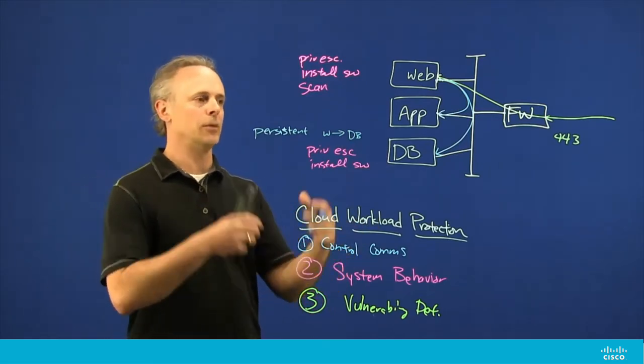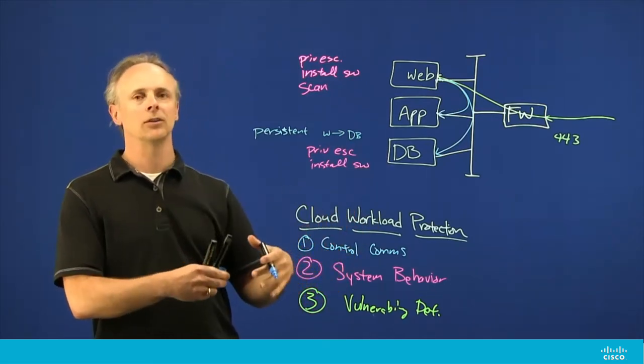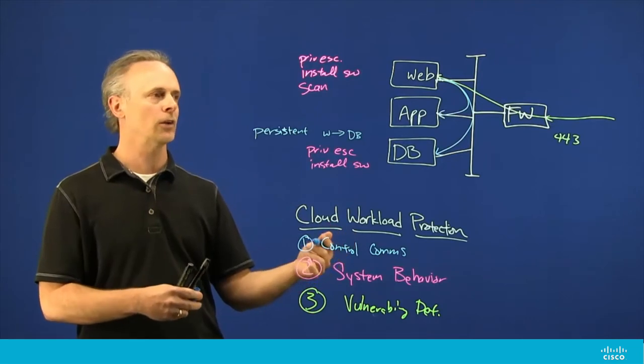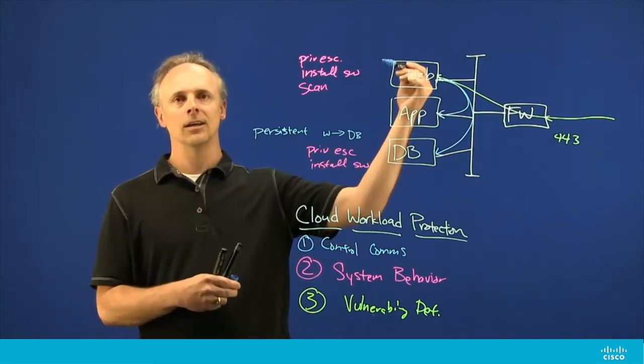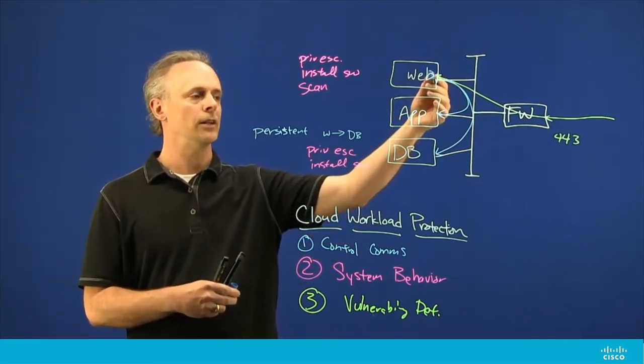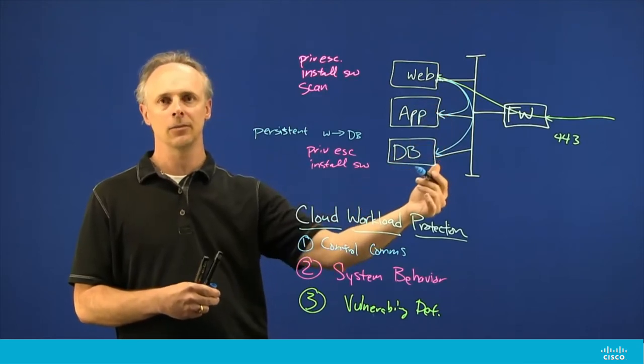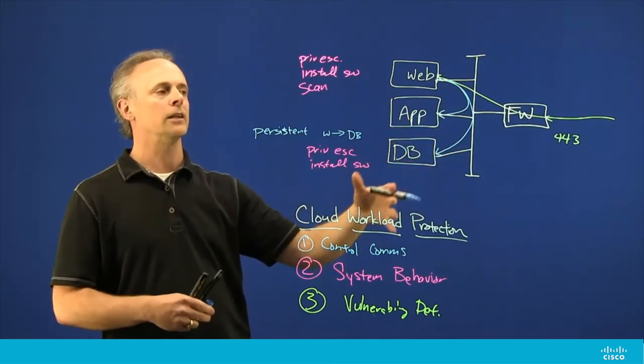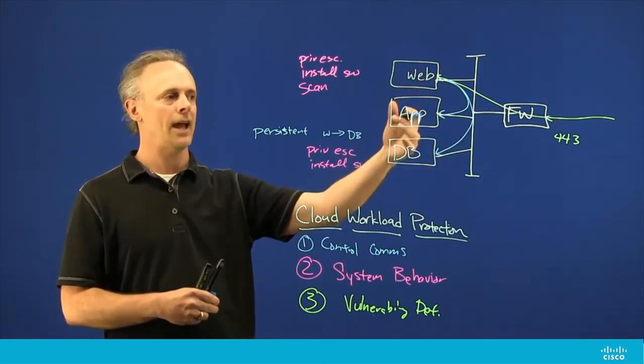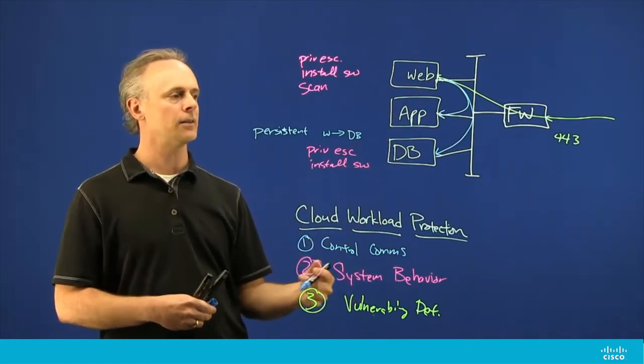If you understand how most tiered architectures work, you'll have a front end tier, a middle tier, and a back end tier. In this example, the web would be the front end, the app would be some sort of middleware, and the database would be the back end.